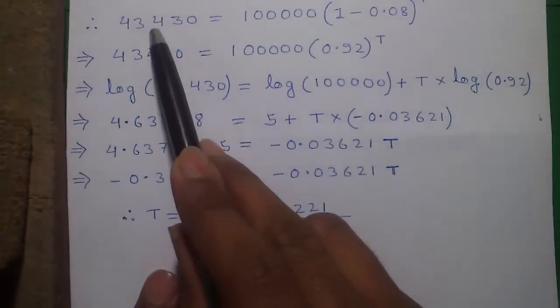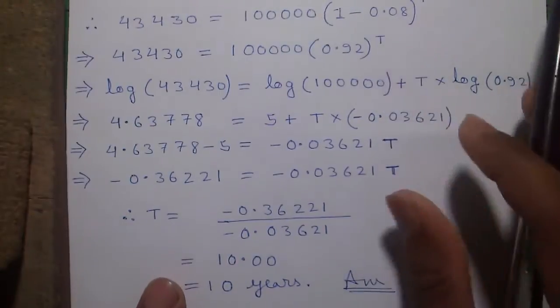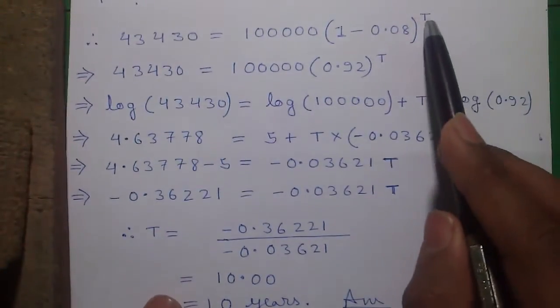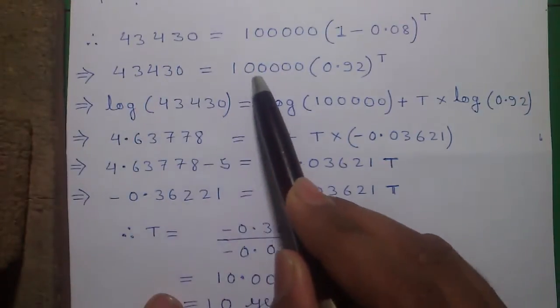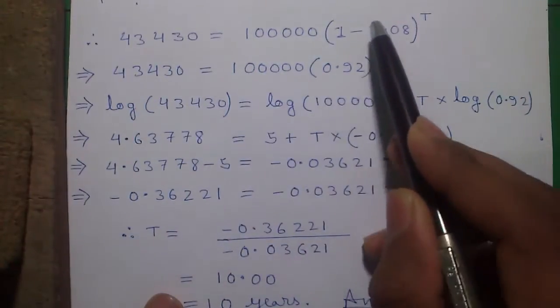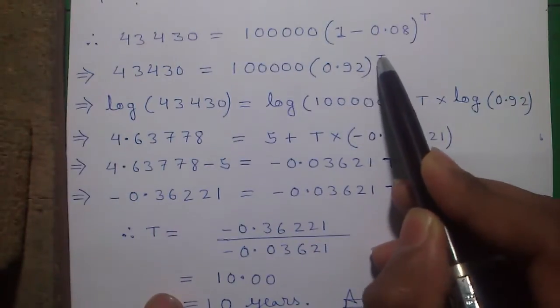So putting into the formula A equals to P into 1 minus R to the power T, 43,430 equals to 1 lakh into 1 minus 0.08 is 0.92 to the power T.